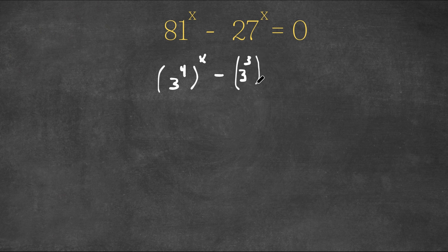So now we have 3 to the power of 3 to the power of x, and this is equal to 0.